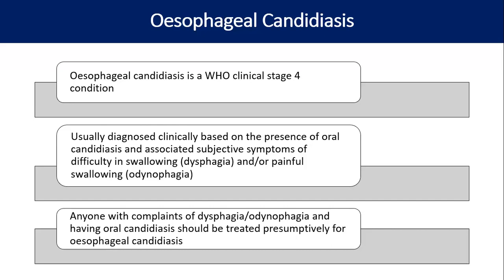In children, unlike adults, esophageal candidiasis may present with nausea, vomiting, dehydration, and weight loss. Classic symptoms like odynophagia may be absent in children, especially those on ART. Esophageal and oral candidiasis mostly happen when the CD4 count goes down significantly — advanced immunosuppression is what gives rise to oral and esophageal candidiasis in PLHIV.